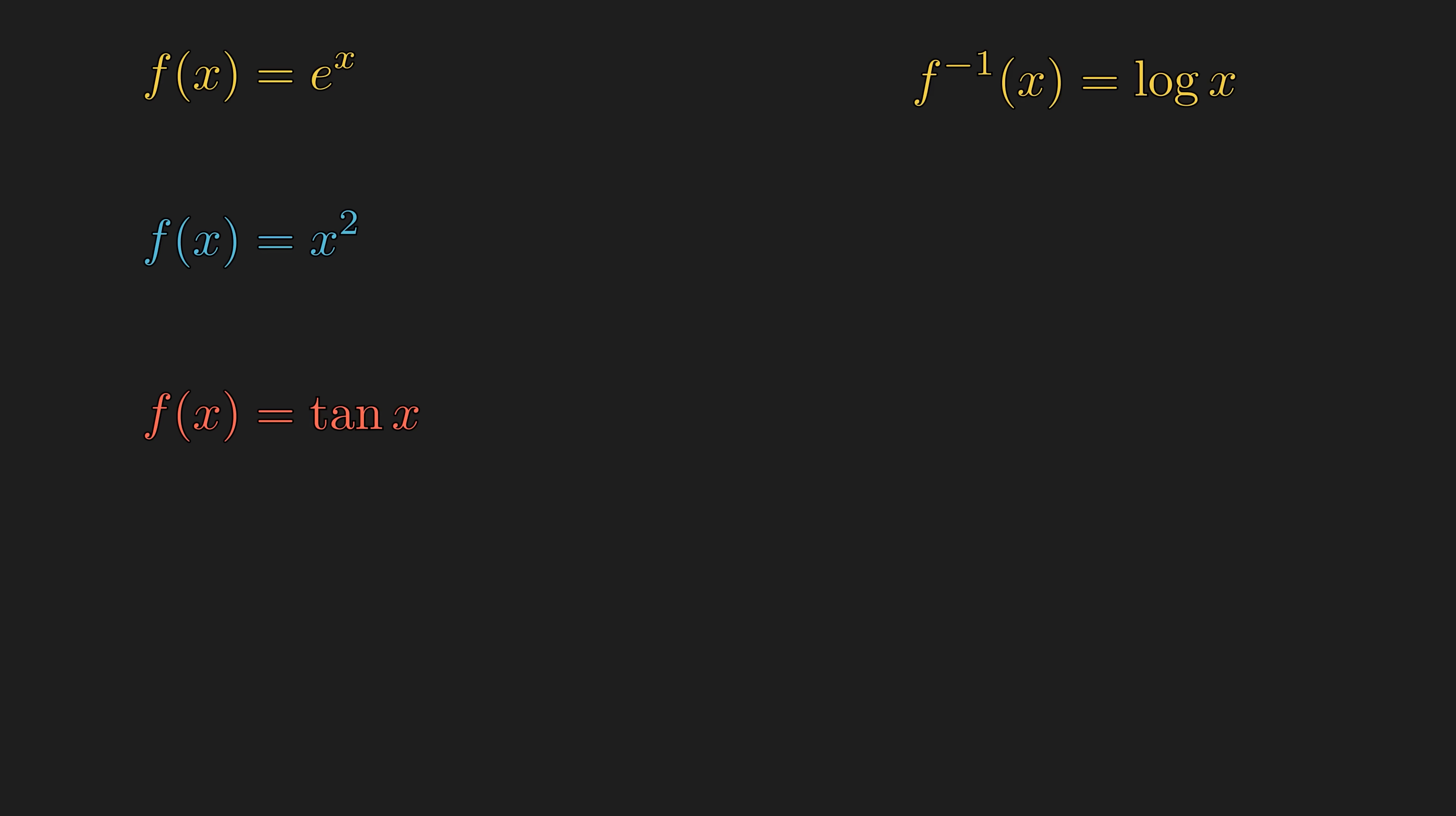Functions are not one-to-one, so we have to choose a branch so that the inverse becomes a function. Mathematicians in the past have already made that decision for us, so we just follow their convention.